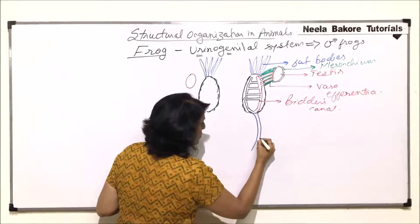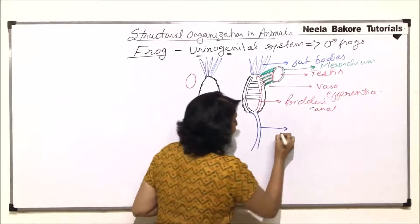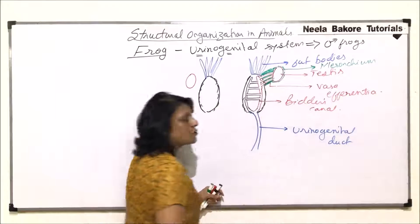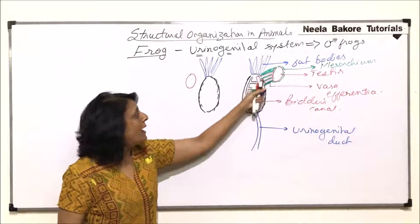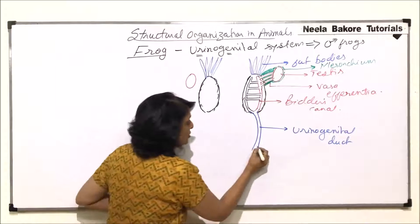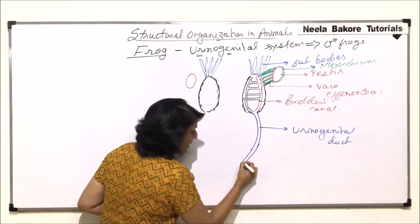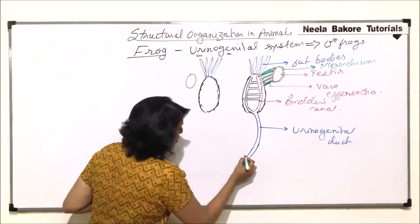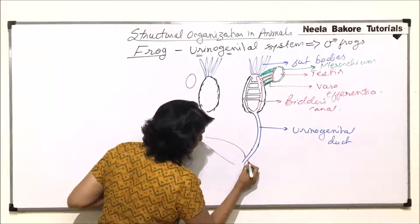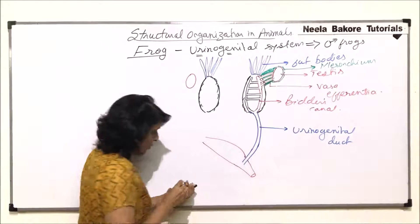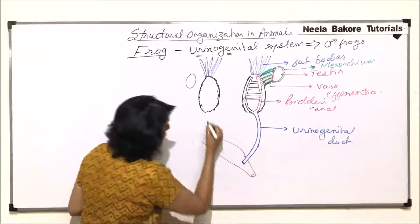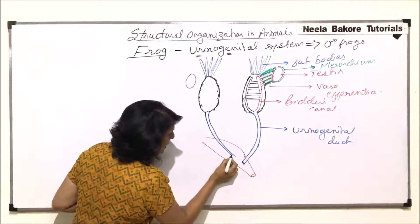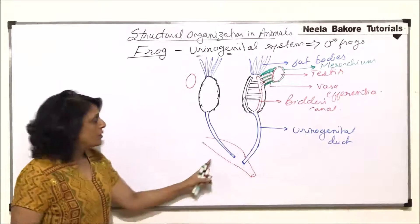From this junction, a common duct emerges called the urinogenital duct. It is called the urinogenital duct because it carries both urine and sperms. This urinogenital duct opens into the rectum, which is that long tubular structure of the digestive system.